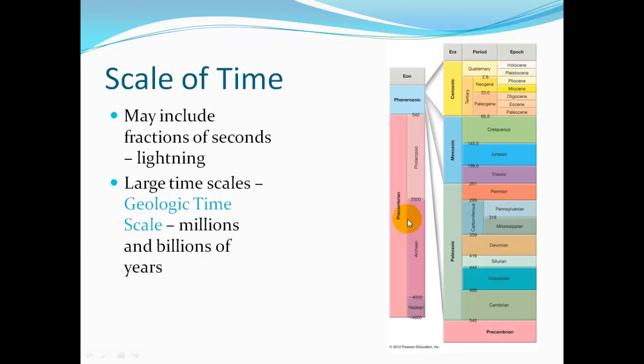The scale of time on Earth varies greatly. Some events happen so fast in fractions of a second, like a lightning bolt. Some things move very, very slowly for long periods of time. The geologic time scale covers millions and billions of years.